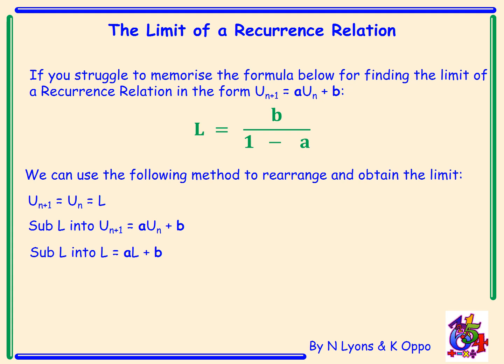Substituting in, we get L = aL + b. We rearrange by moving aL to the left-hand side to get L − aL = b. We then take out a common factor of L, giving L(1 − a) = b. Finally, dividing both sides by (1 − a), we get L = b/(1 − a). So if you struggle to memorise the formula, replace u_(n+1) and u_n in your recurrence relation with L and rearrange.